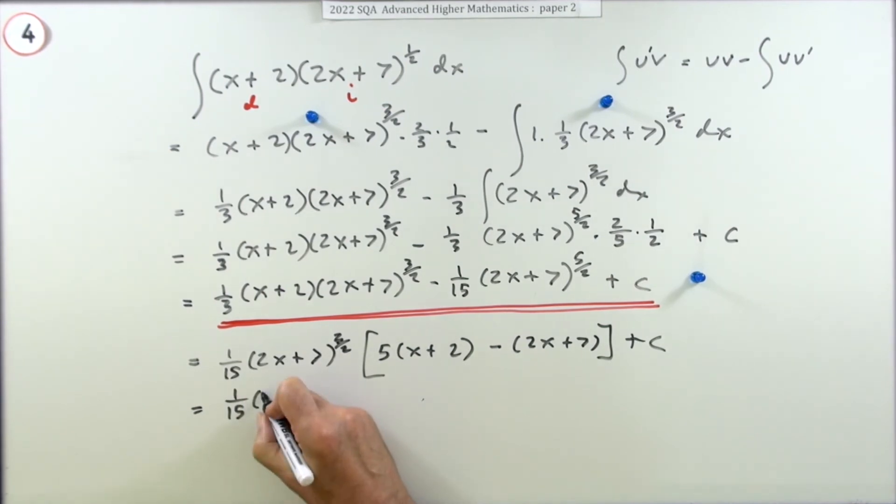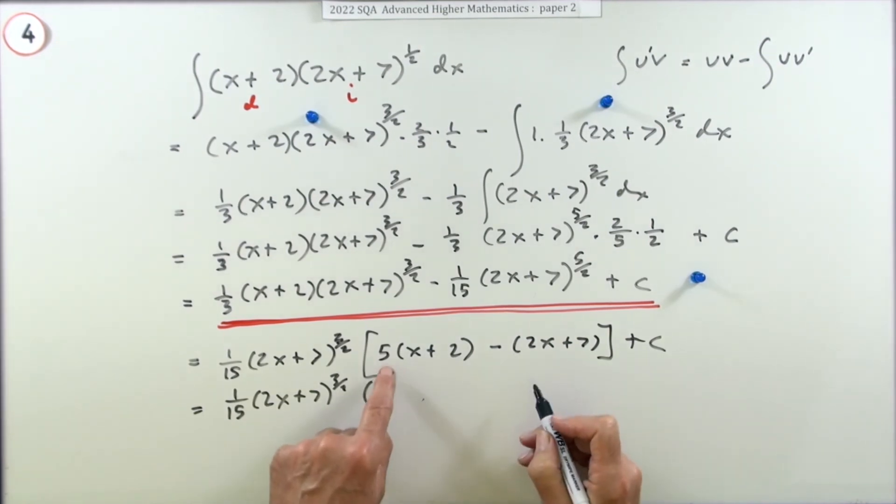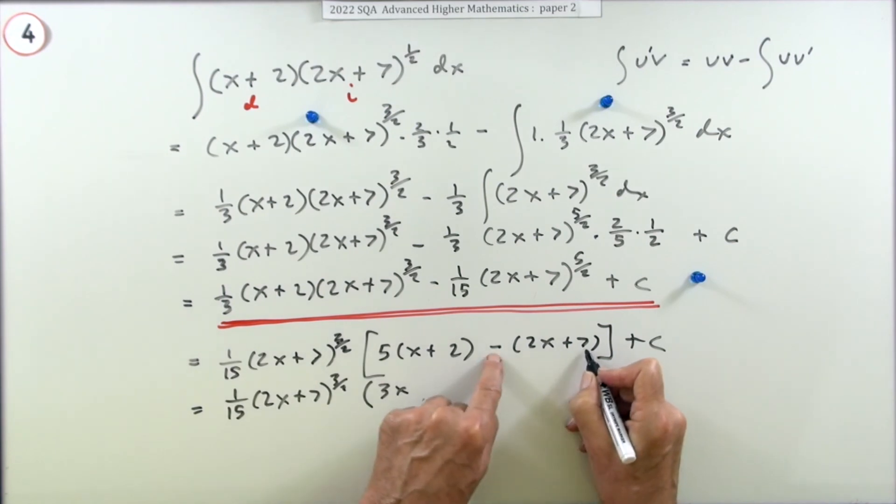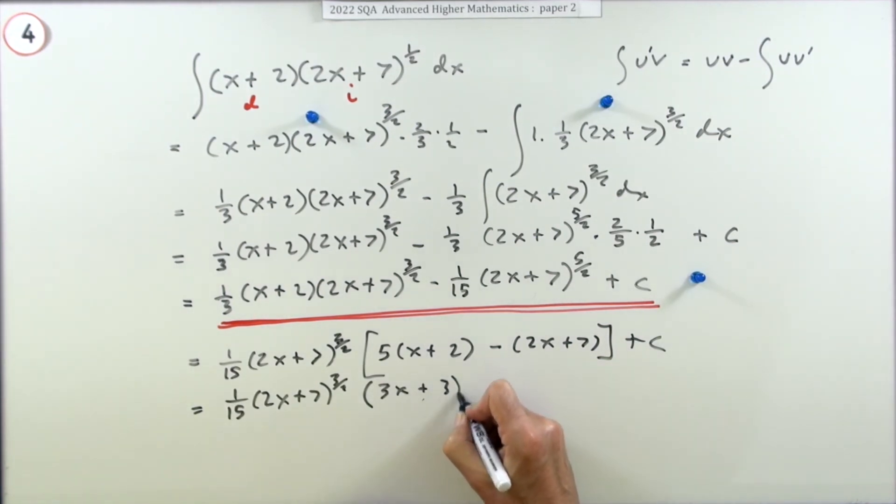So that would be a 15th - you don't have to do this, remember - of (2x + 7) to the 3 upon 2 of, now what have you got all together? 5x minus 2x is 3x, 10 take away 7 is 3. Oh that's very handy! Plus the c. Well there's a common factor of 3 that can come out. 3 over 15, that's a fifth. So that's just (x + 1) times (2x + 7) to the 3 upon 2 plus c, which looks much neater.